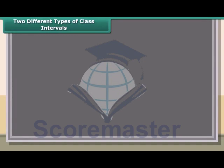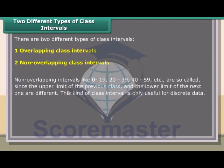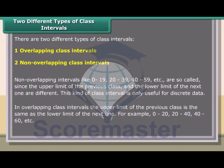There are two different types of class intervals: overlapping class intervals and non-overlapping class intervals. Non-overlapping intervals like 0–19, 20–39, 40–59, etc., are so called since the upper limit of the previous class and the lower limit of the next one are different. This kind of class interval is only useful for discrete data. In overlapping class intervals, the upper limit of the previous class is the same as the lower limit of the next one — for example, 0–20, 20–40, 40–60, etc.